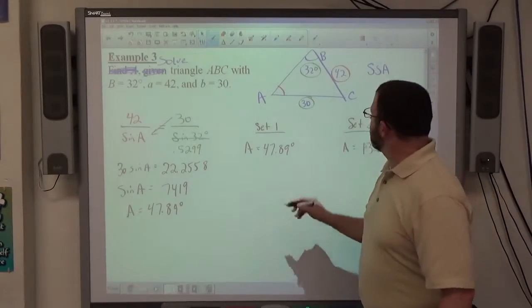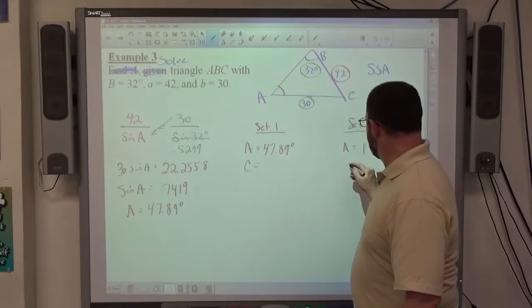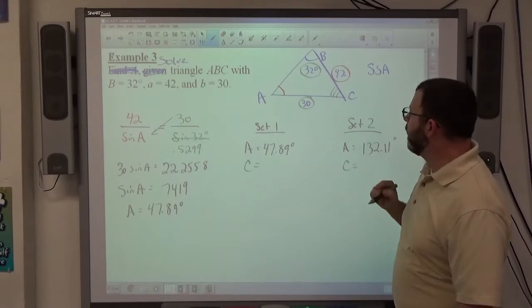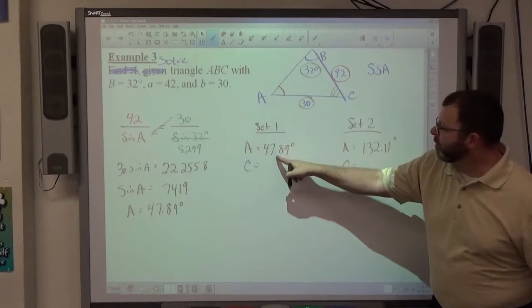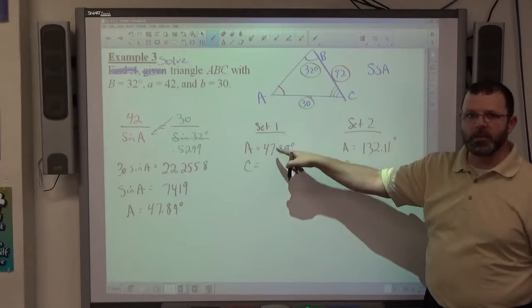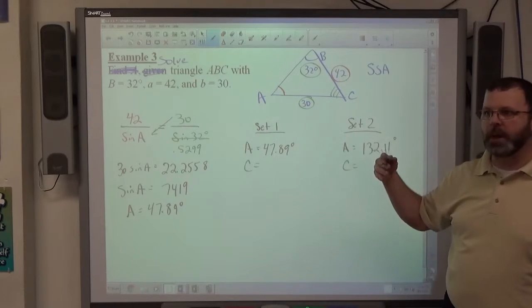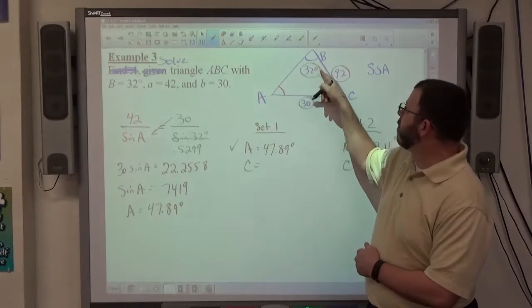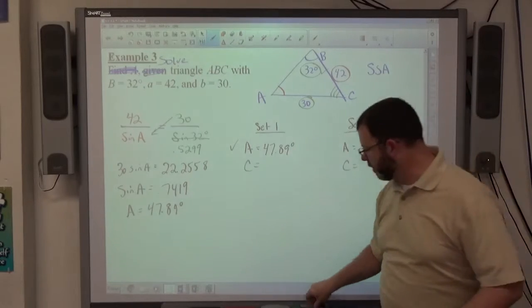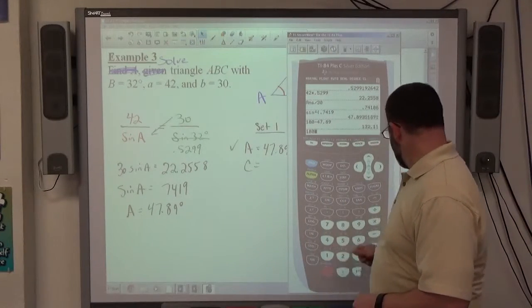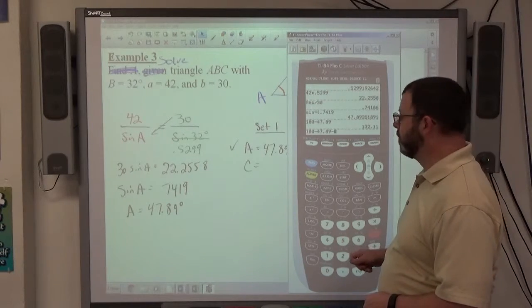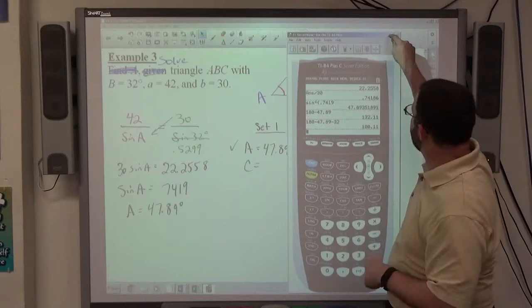Then we're supposed to find angle C for both. Look at angle C. It's the third angle. At this point, if I know A is 47.89 and B is 32, to get C, I've got to do 180 minus these two angle measures. That's all I'm doing to find angle C. At this point, once I know A is this, and I already know B is this, 180 minus these two answers gets me the value of C. So if I do 180 minus 47.89 minus 32, that comes out to 100.11 degrees.